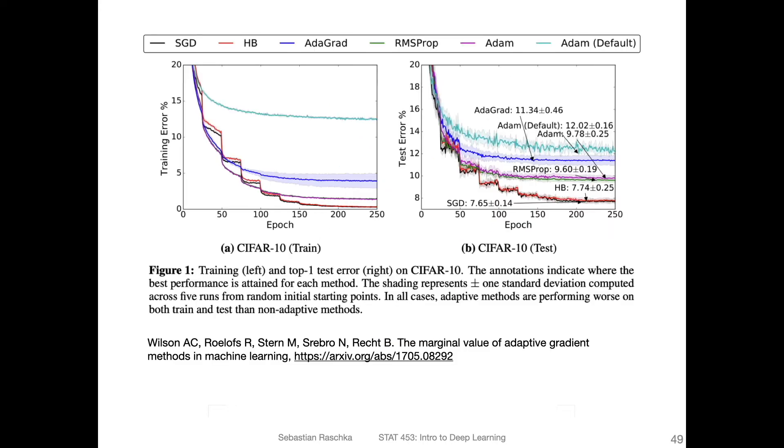To explain you more in detail what I mean, here's a visualization from a paper from I think 2017. Here they also looked at different optimization algorithms, they looked at the training error here and the test error.